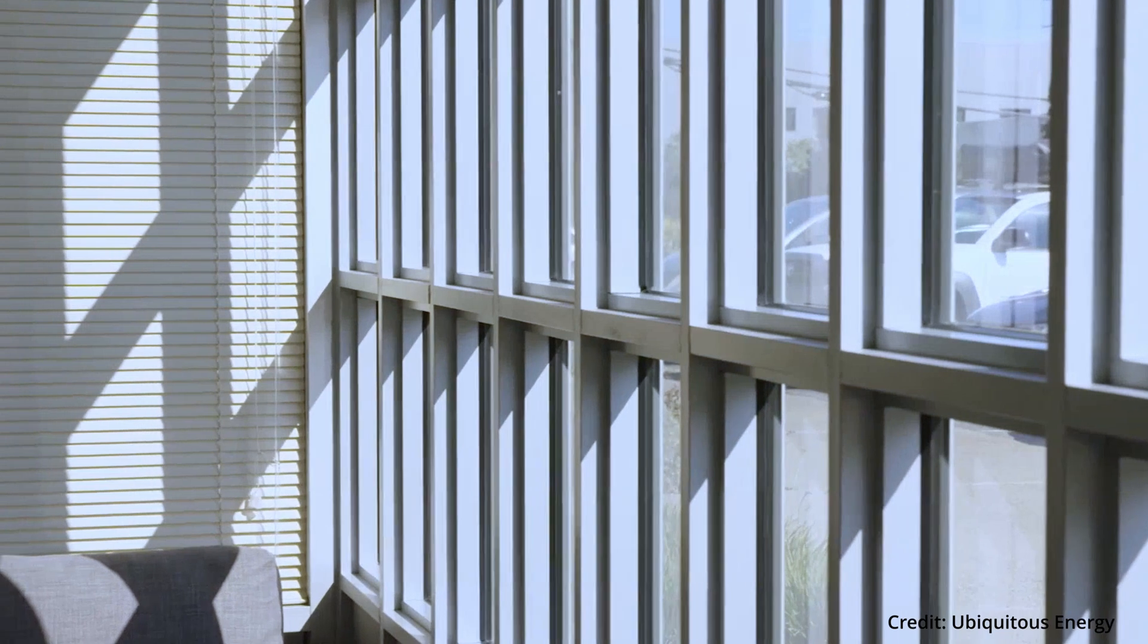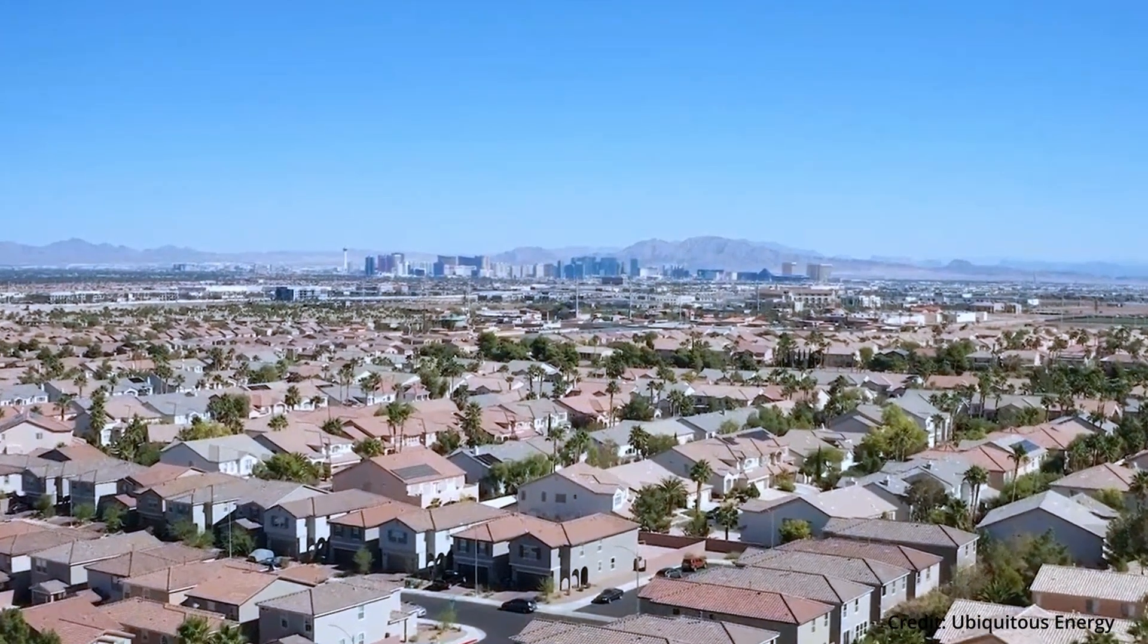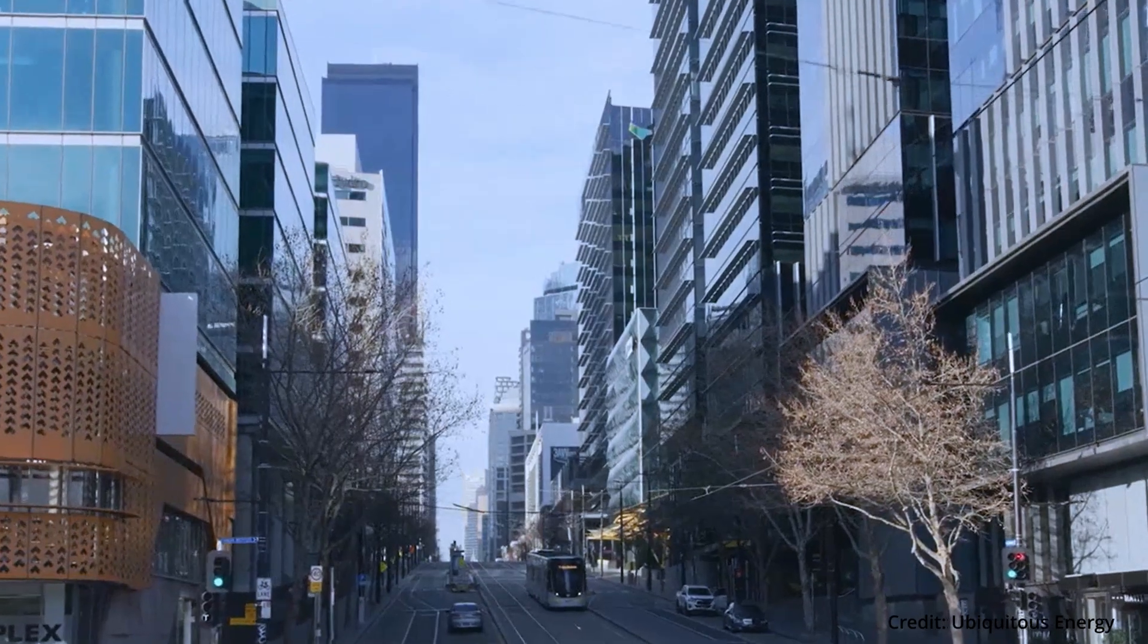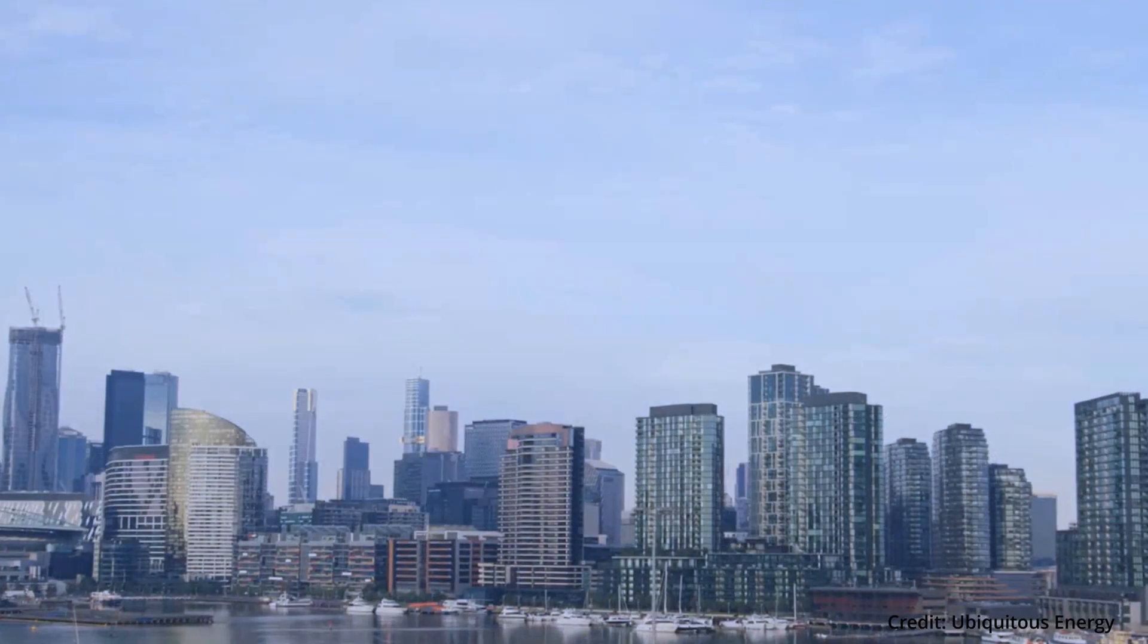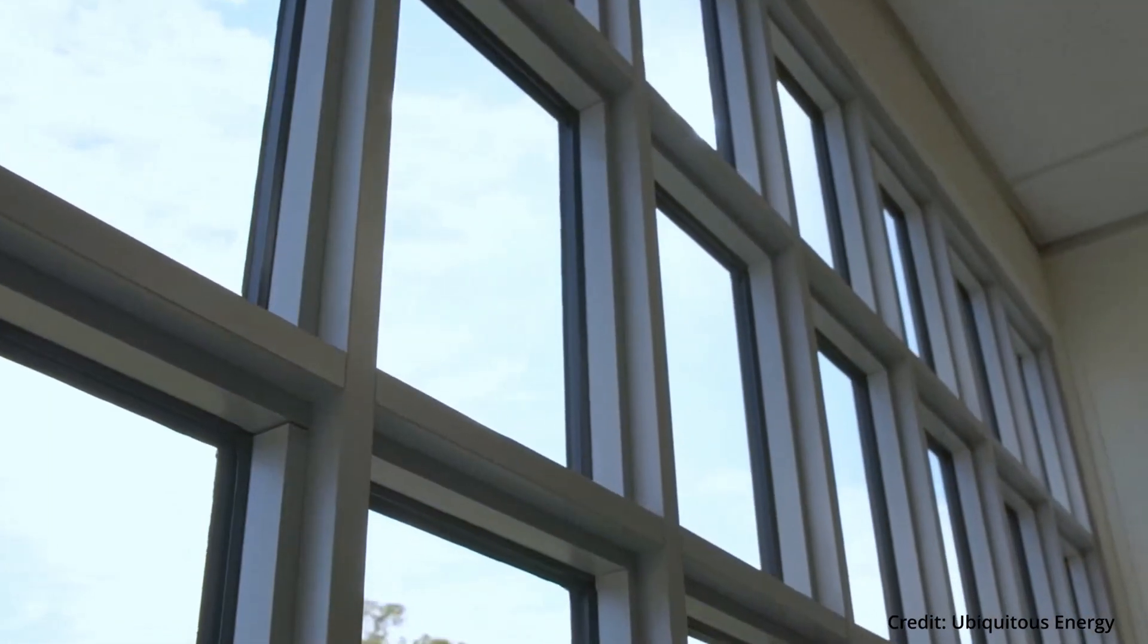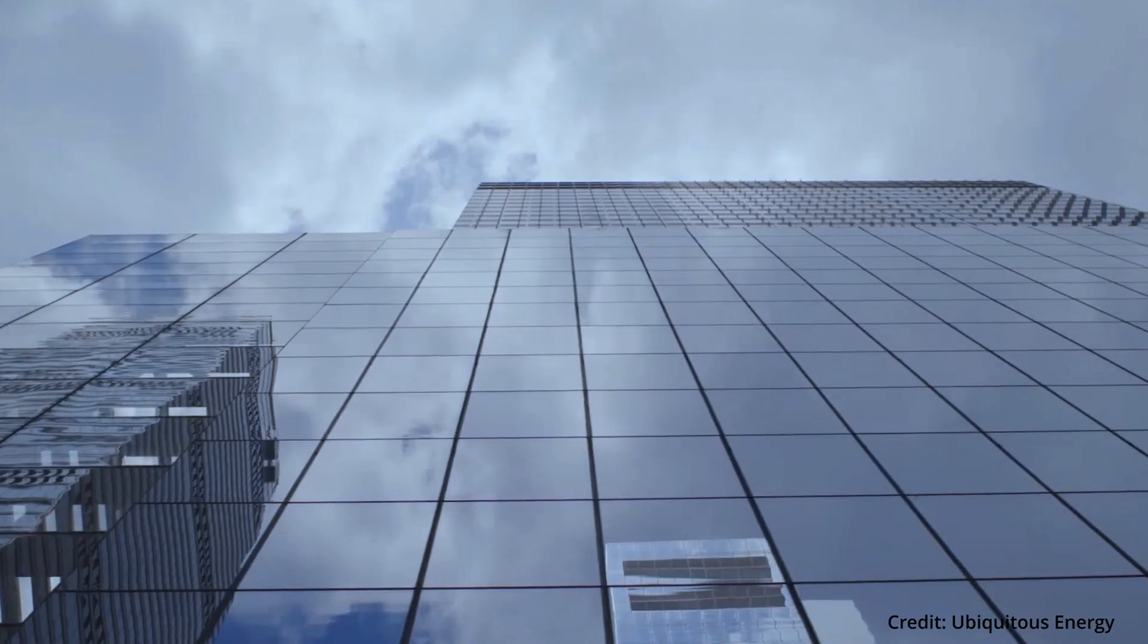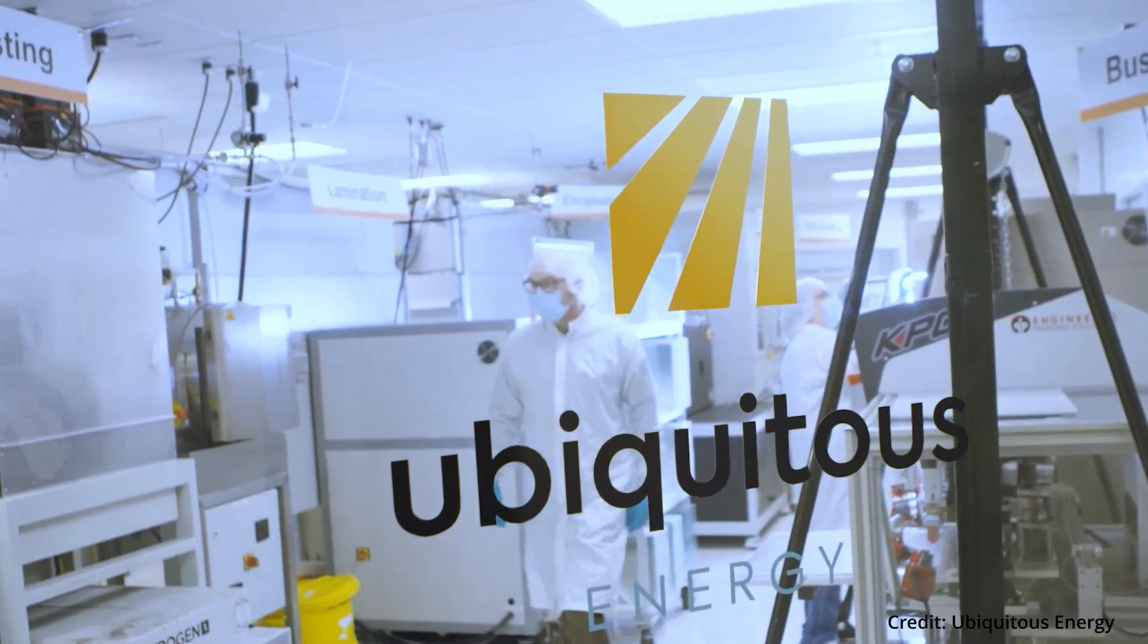There's so much glass in the world, meaning the potential is huge. For example, the U.S. alone is estimated to have between 5 and 7 billion square meters of glass surface. Skyscrapers generally have a massive glass surface, which has potential for buildings like these to generate an enormous amount of clean renewable energy from the sun.